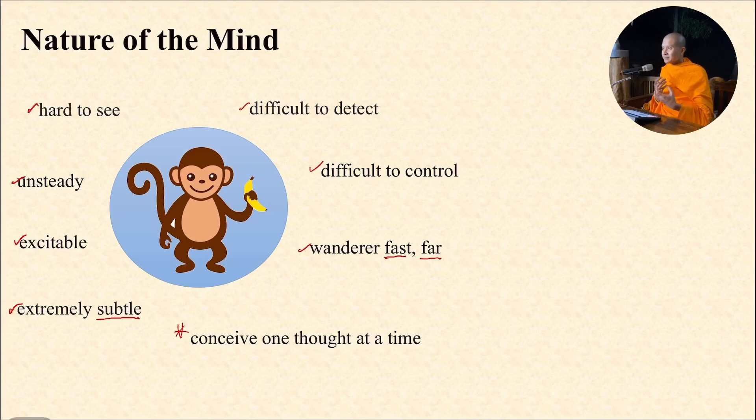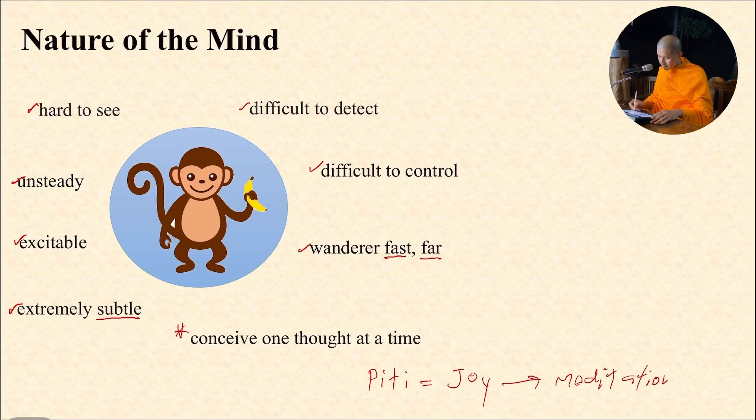And one thing that I found in the Buddhist text, the technique that many monks use - the word that they use - they call it piti. Piti is joy. Joy is the foundation of having good meditation. I said, wow, this is interesting. That means when I start meditating and I don't know what to think today, maybe a lot of things happened before I came to this meditation room.